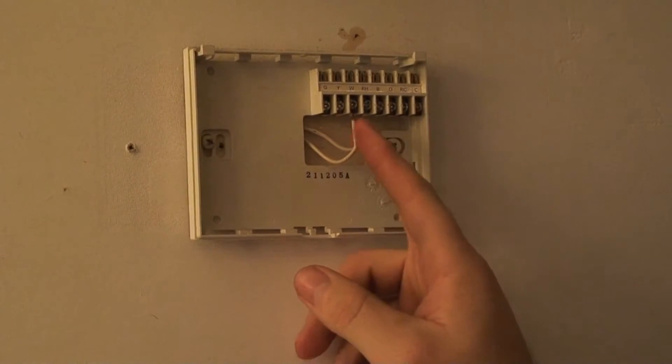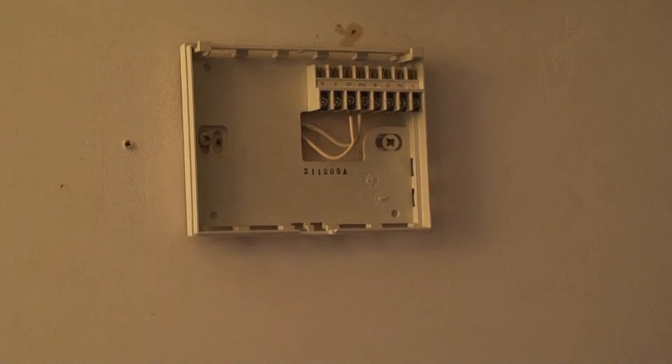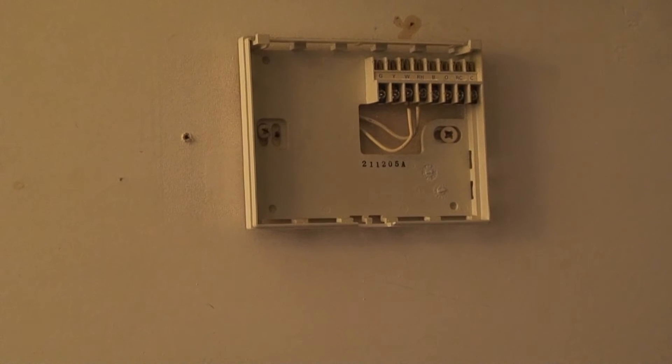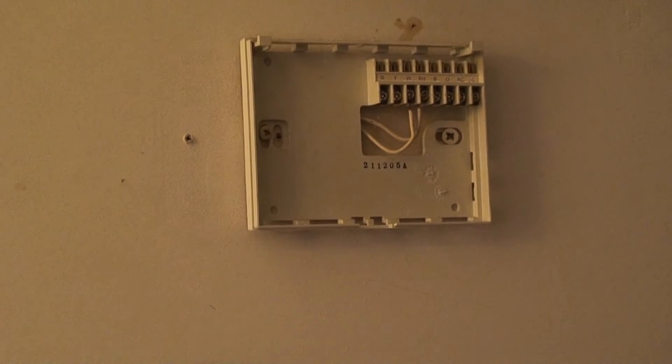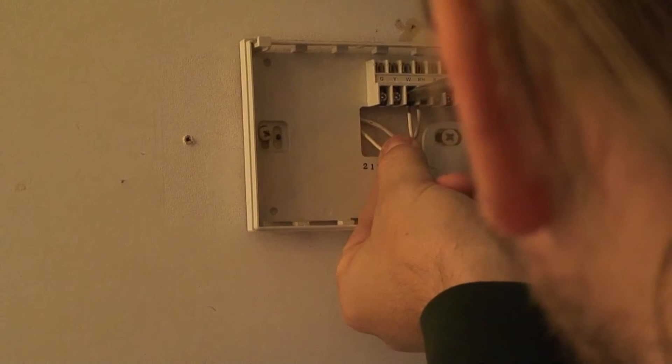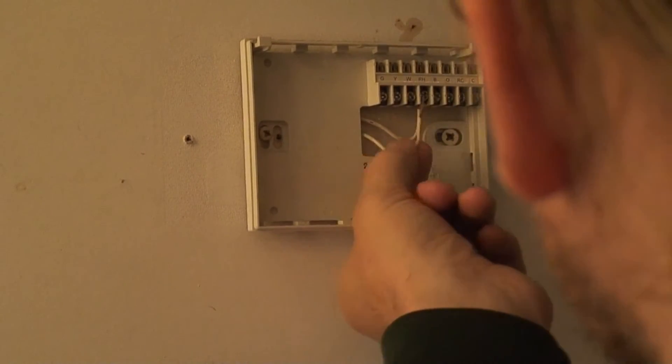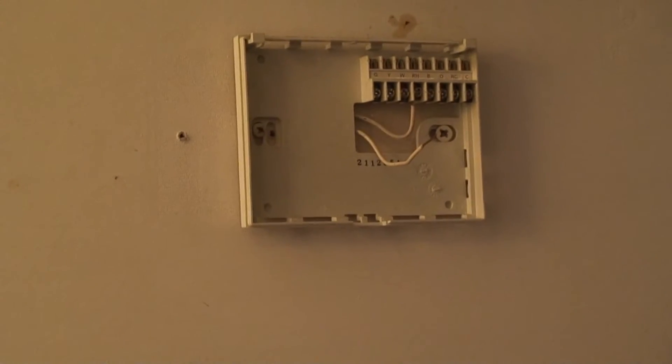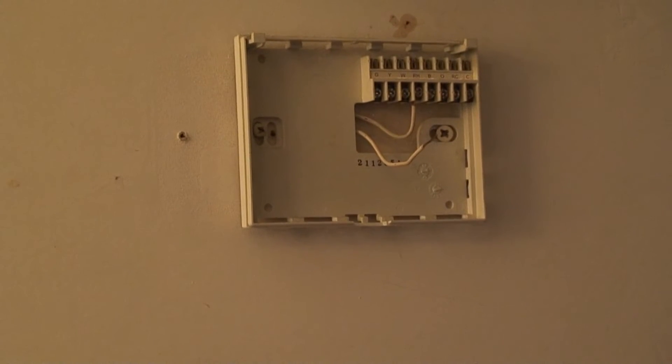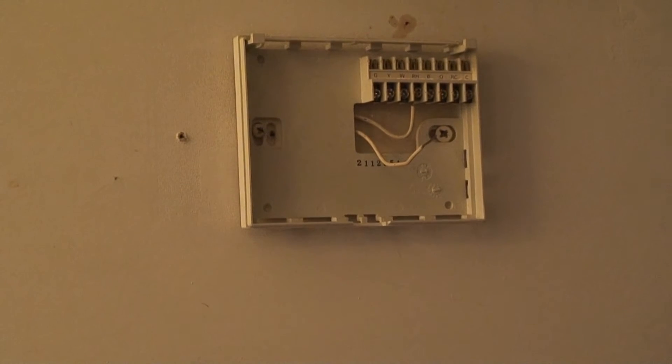Two wires: W and RH. Dusty too. So take the wires off first. And then this one comes with a label. This wire is W. I got labels that came with it, little stickers, so I know which wire did what.